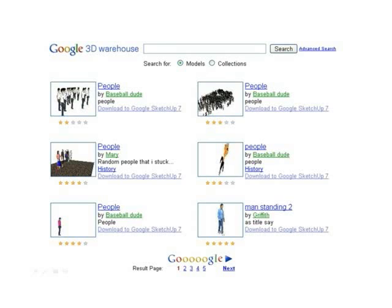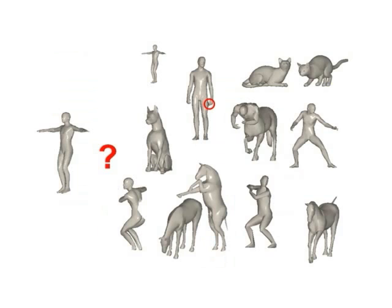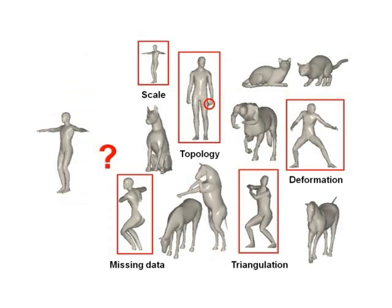The availability of large-scale shape databases in the public domain makes shape retrieval one of the next grand challenges in information search and management. One of the main difficulties in content-based shape retrieval is the huge variability of the transformations a shape can undergo. Recent works showed that shape retrieval can be approached as image retrieval in computer vision.